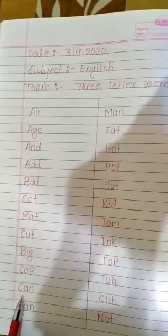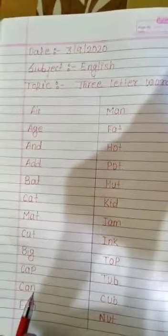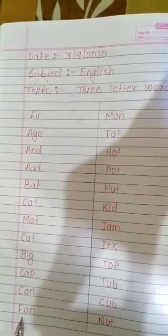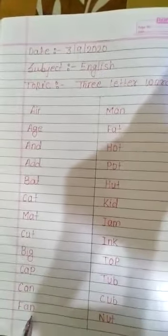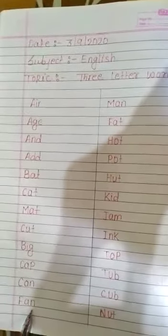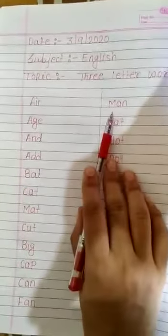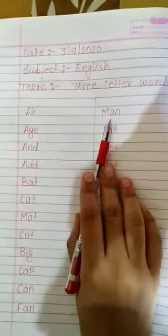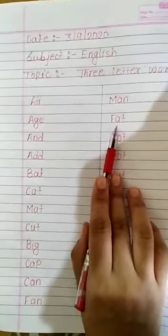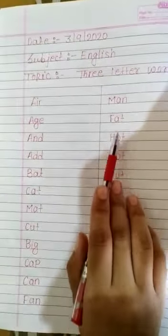C, A, N. कैन. F, A, N. फैन. M, A, N. मैन. F, A, T. फैट.